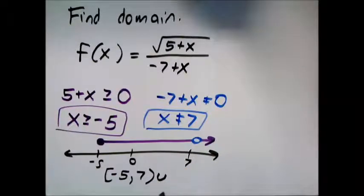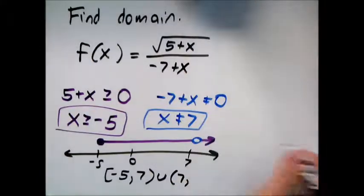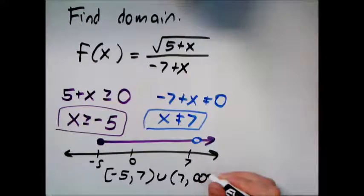Or, and this is our little symbol for or, the union, I can take numbers from 7. Once again not included because we're not supposed to use 7, and then up to infinity because I can take anything after that.